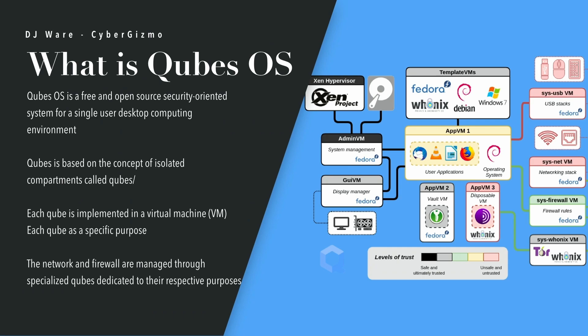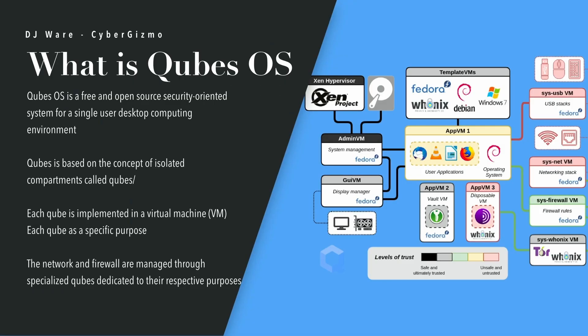Qubes is based on the concept of isolated compartments, and those isolated compartments are known as Qubes — hence the name Qubes OS. Each cube is implemented in a virtual machine and has a very specific purpose. The first thing you'll notice is there's some color coding that indicates the levels of trust, going from black, which would be the most trusted, to red, which is the least trusted.